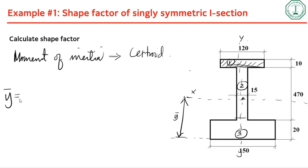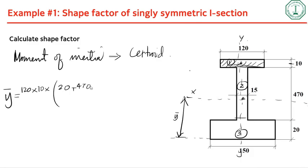For the first rectangle, the moment contribution is 120 times 10 times the distance to its centroid, which is 20 plus 470 plus 5. The centroid of that rectangle is at its mid-height, so you have 20 plus 470 plus 5.